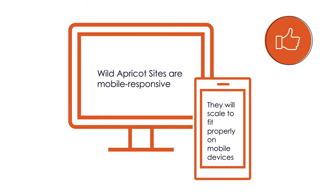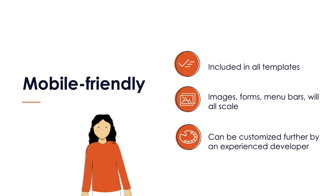All of Wild Apricot's themes are mobile-friendly. Whether the user is viewing it on the desktop or on their mobile phone, the site will scale down to fit and should look perfectly fine on either. It's included in all of our themes — it allows all the images, forms, and menu bars to shrink down or scale up depending on the screen size. And if you're an experienced developer and want to tweak that behavior further, you're welcome to do so via CSS, JavaScript, or other customization.